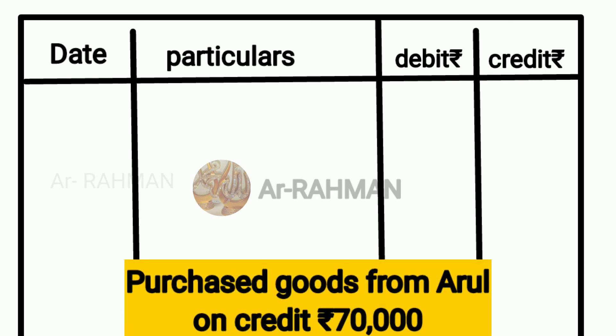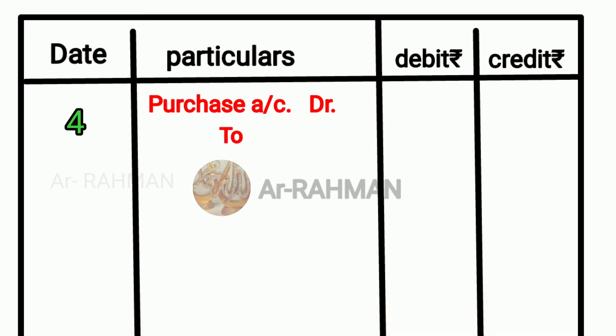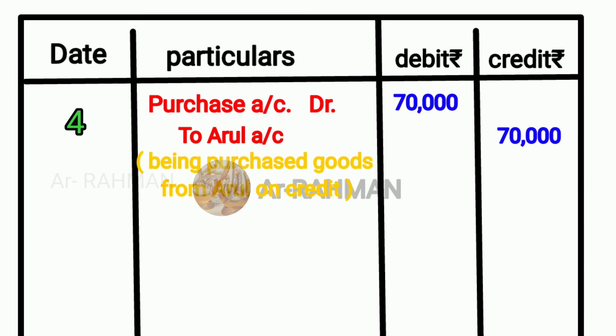Next question: purchased goods from Arul on credit. Arul is the creditor — goods purchased without cash payment, that is credit. So purchase account Dr and to Arul account. The amount is Rs.70,000 and here also Rs.70,000. Narration: being purchased goods from Arul on credit.